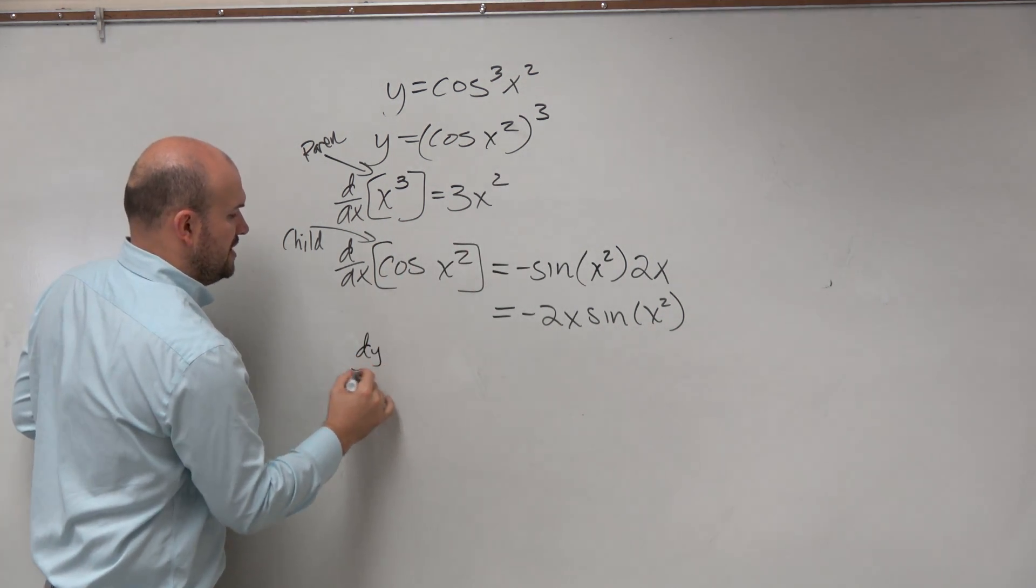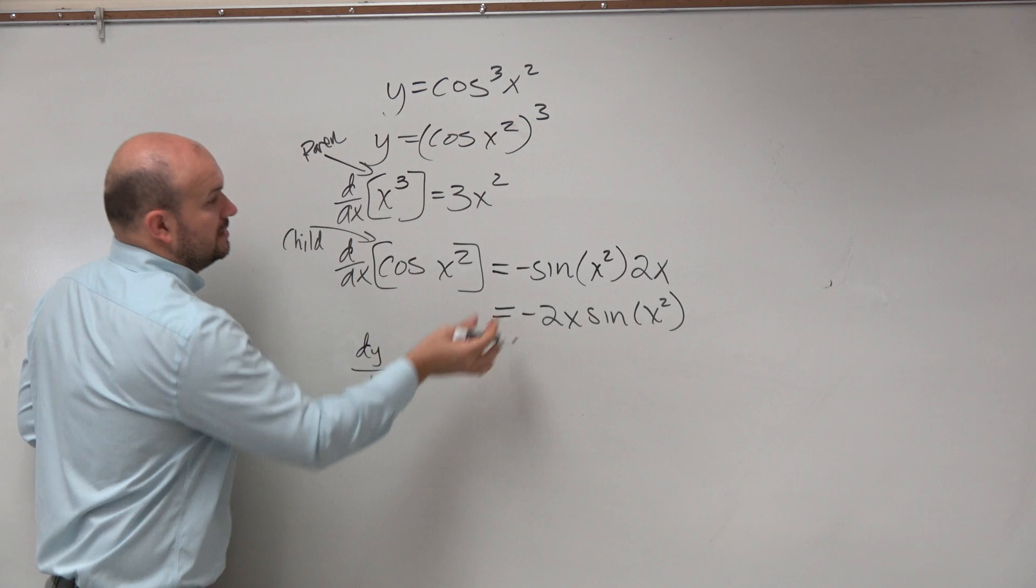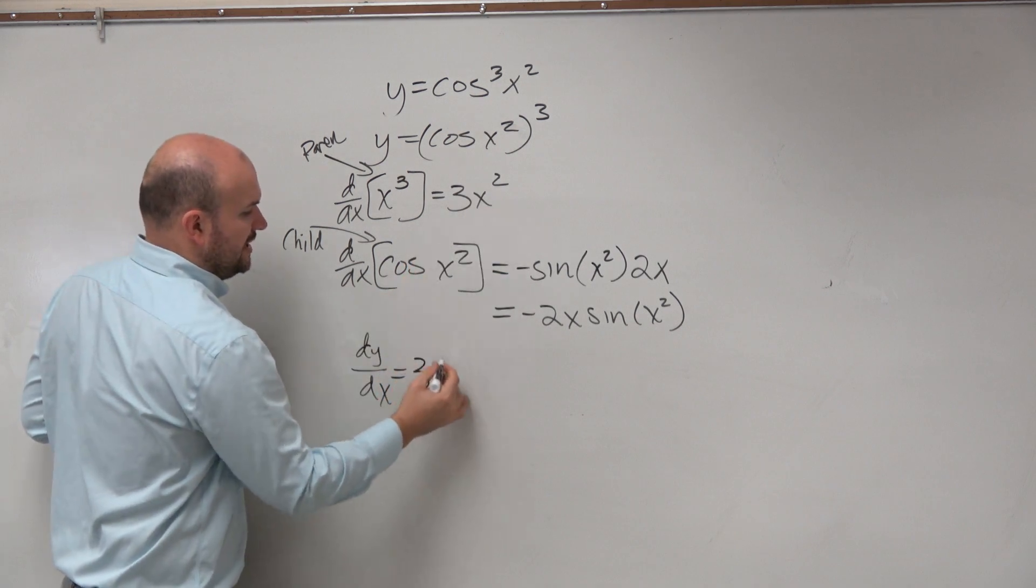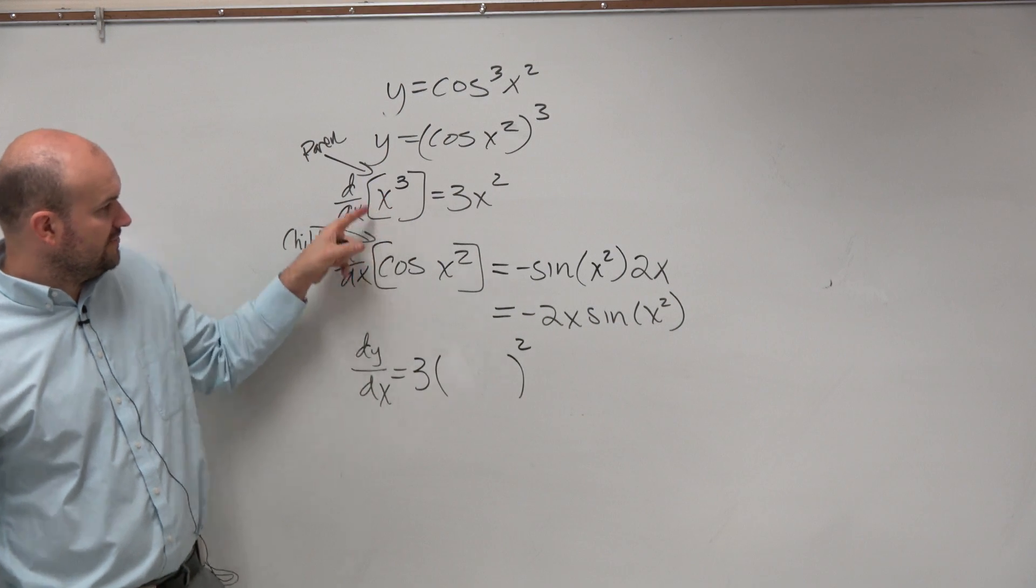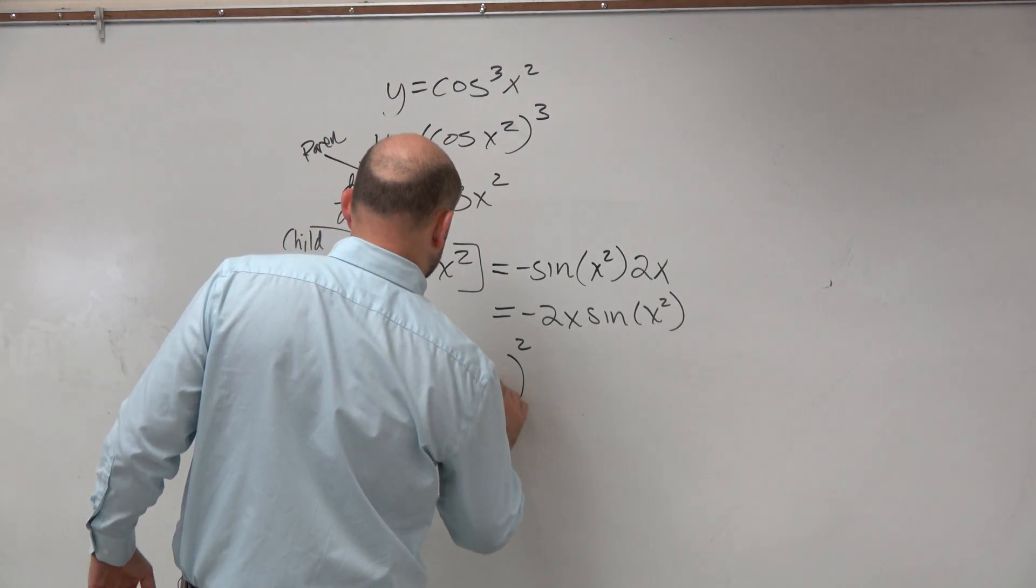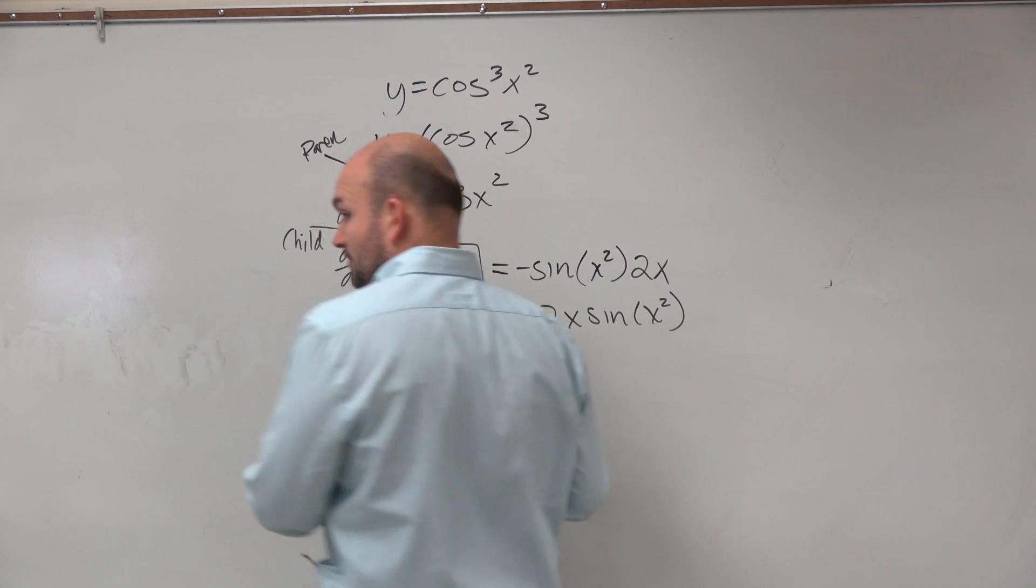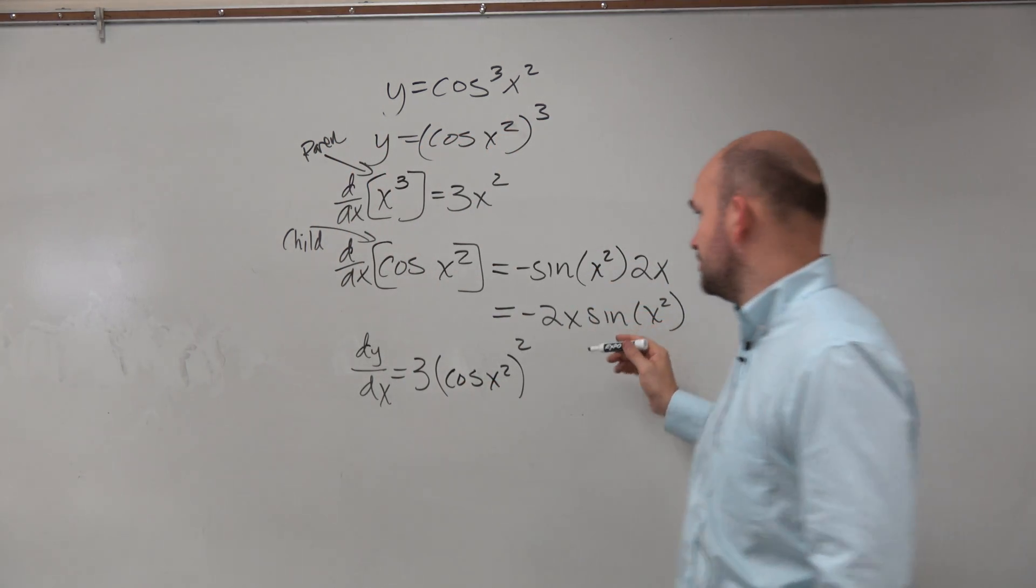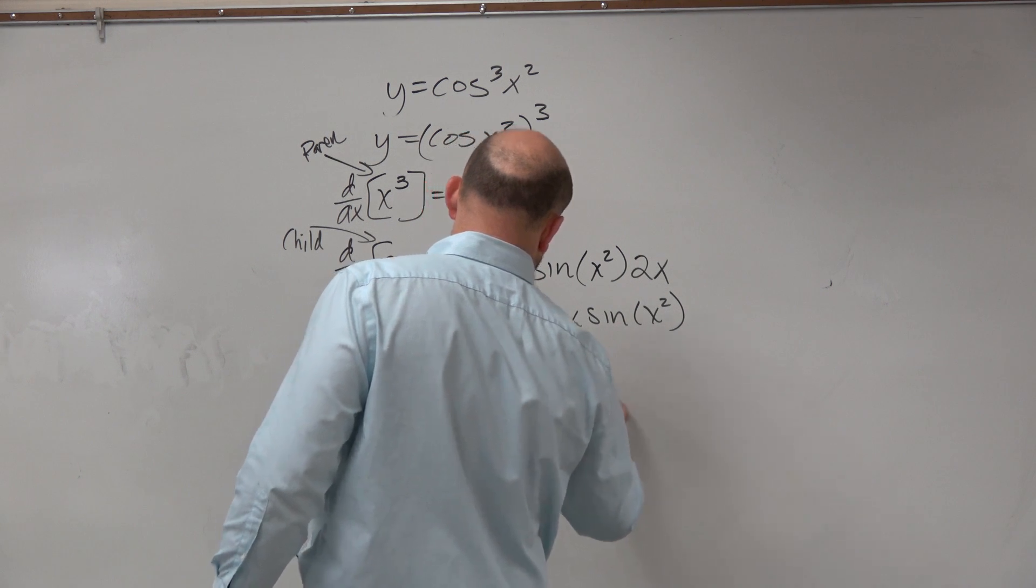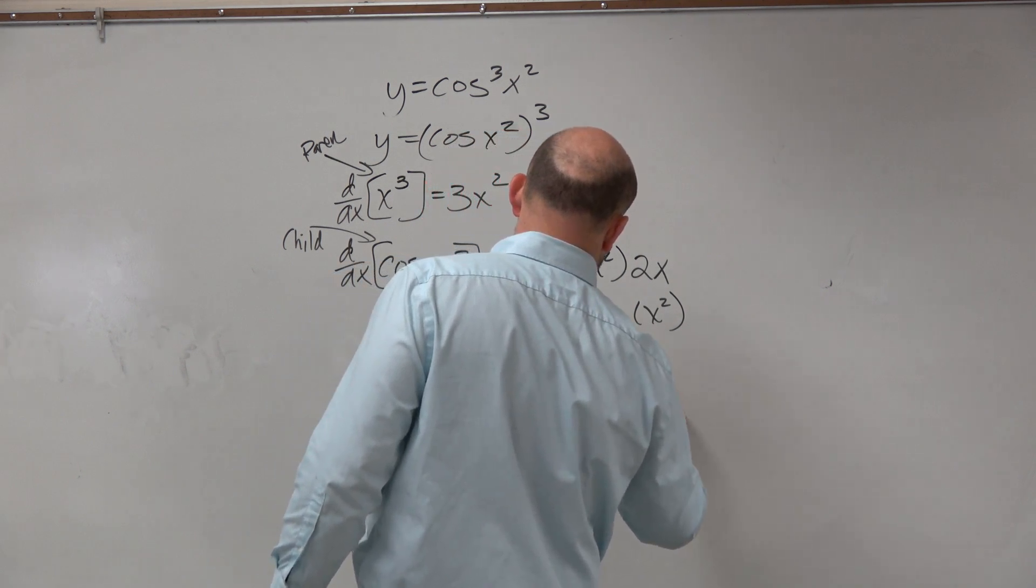So let's do dy over dx. Derivative of this, 3 squared. And then we plug in the child function, which is cosine of x squared, right? And then we multiply it by the derivative of the child function, which is negative 2x sine of x squared.